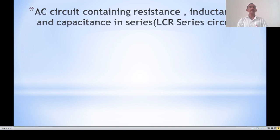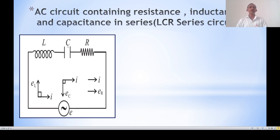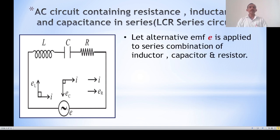First of all, we have to discuss the AC circuit containing resistance, inductance, and capacitance in series combination. In this case, we consider inductor L, capacitor C, and resistor having resistance R connected in series, and this series combination is connected across an AC voltage source. Let the alternating EMF E be applied to this series combination of inductor, capacitor, and resistor.